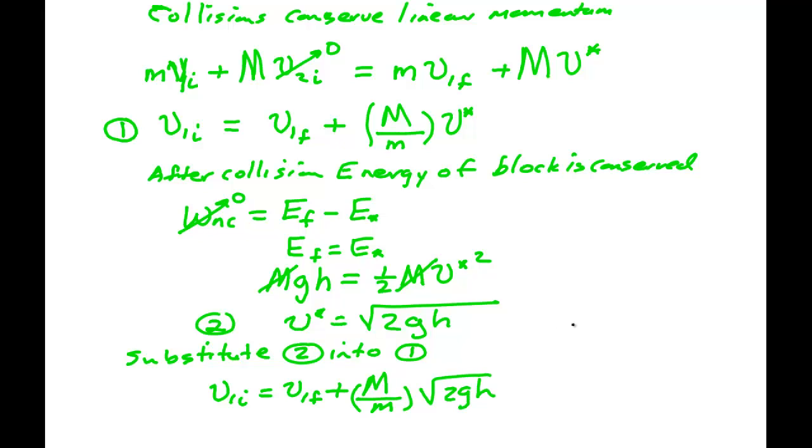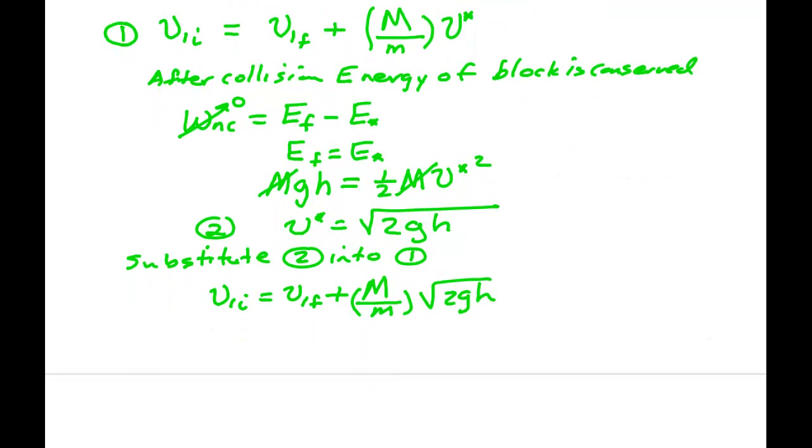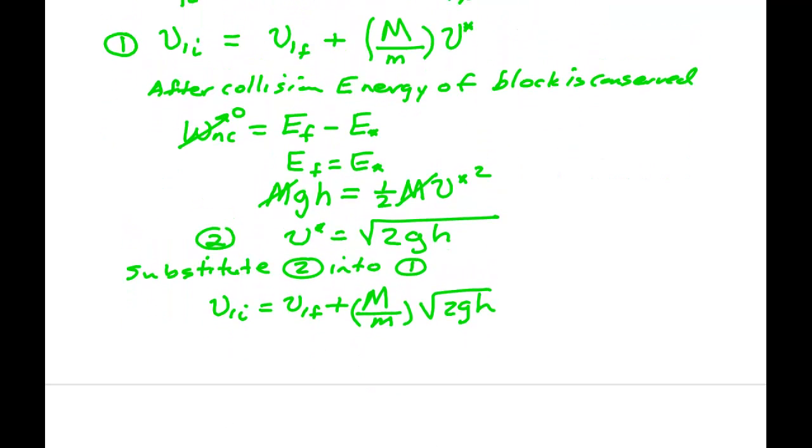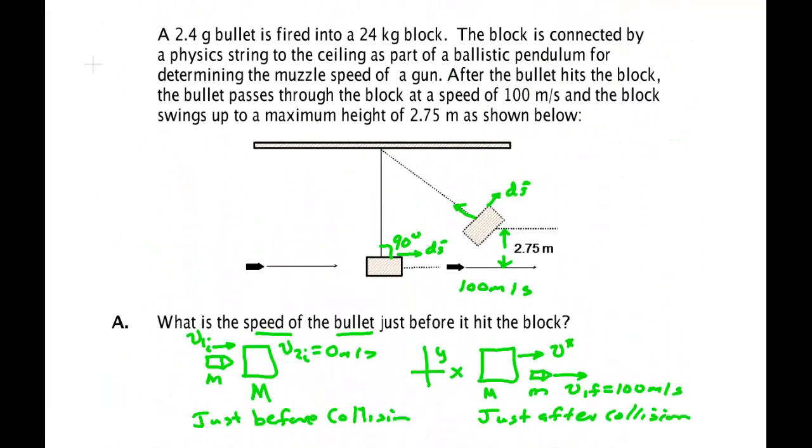So get my calculator out. Of course have to make sure that I use the correct numbers from the problem. So let's see. I know that the initial velocity of this is 100 meters per second. Plus I need the mass of the block in the problem. Let's see what the mass of the block in the problem was. Mass of the block was 24 kilograms.